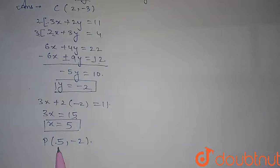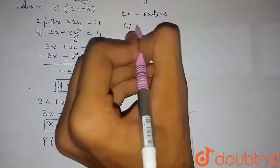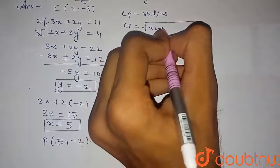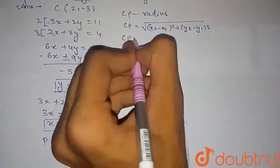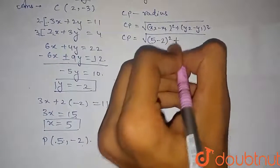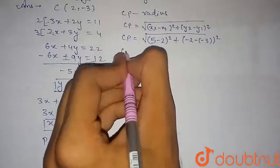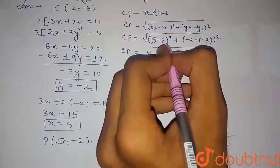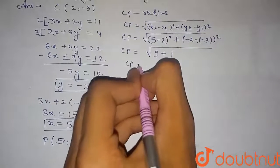We will use the distance formula to get the radius of the circle, since CP acts as the radius. Using the distance formula: CP = √[(x₂ - x₁)² + (y₂ - y₁)²]. Substituting the coordinates of C and P: CP = √[(5 - 2)² + (-2 - (-3))²] = √[3² + 1²] = √[9 + 1].